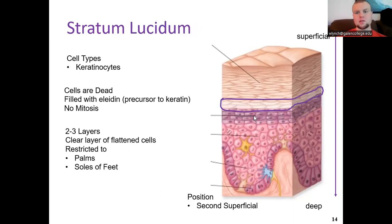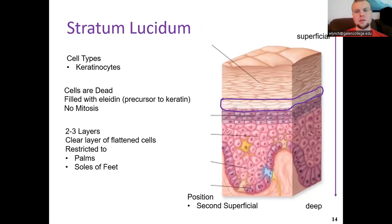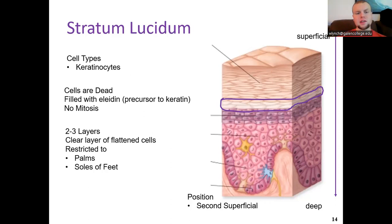The stratum lucidum only exists in very thick skin, found in the palms of the hands and soles of the feet. It is an area of clear, flattened cells. These keratinocytes have become keratinized — they are dead cells filled with a protein known as eleidin, a precursor protein that leads to keratin as it continues to age. This is the second most superficial layer and is only present in areas of the thickest skin.